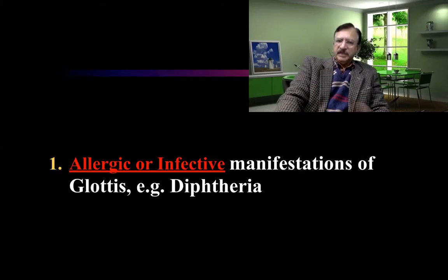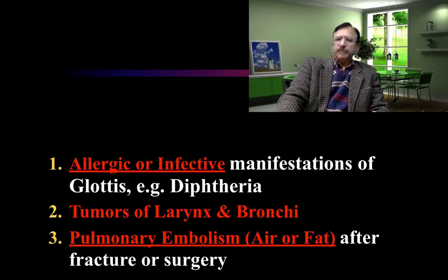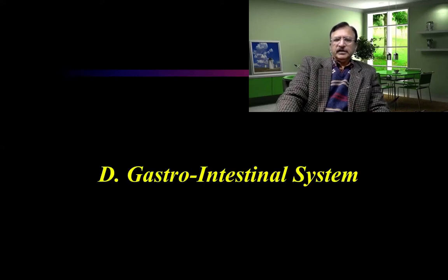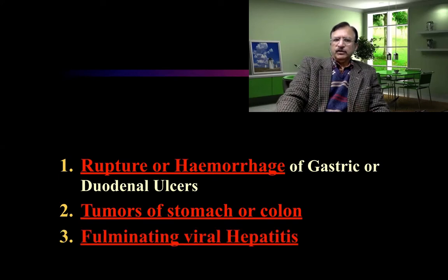In the respiratory system, allergic manifestations such as glottis edema, diphtheria, asthma, or other conditions causing allergic reactions can be causes, as well as tumors of the larynx and pulmonary embolism. Fat or air embolism after surgery can also be a cause of death. In the gastrointestinal system, causes include rupture of gastric or duodenal ulcers, tumors of the stomach and colon, and fulminant viral hepatitis.